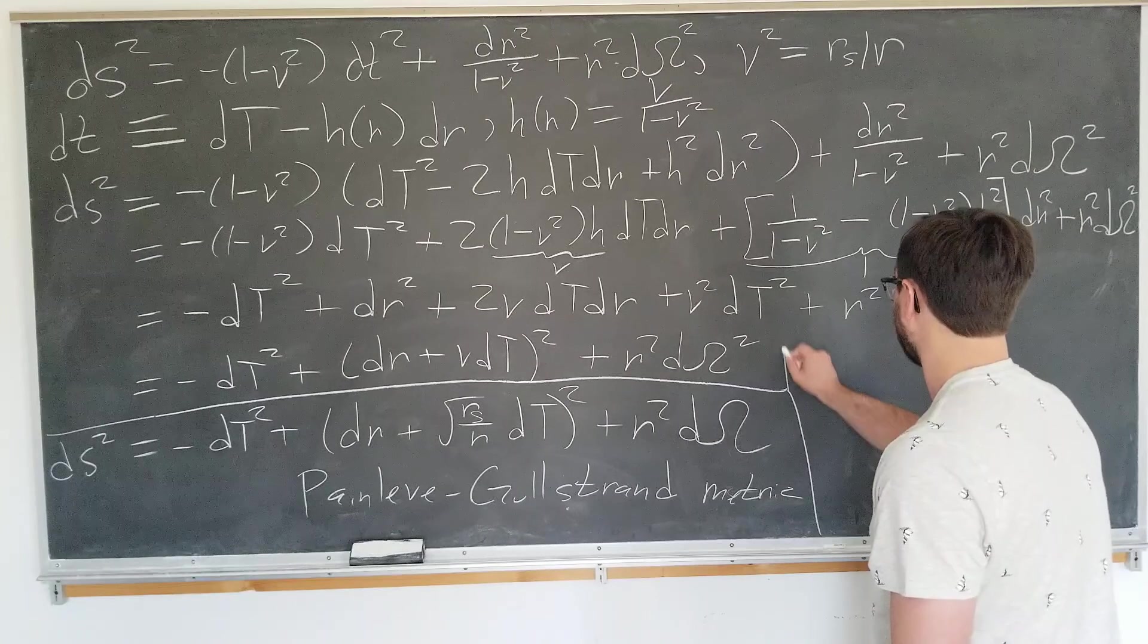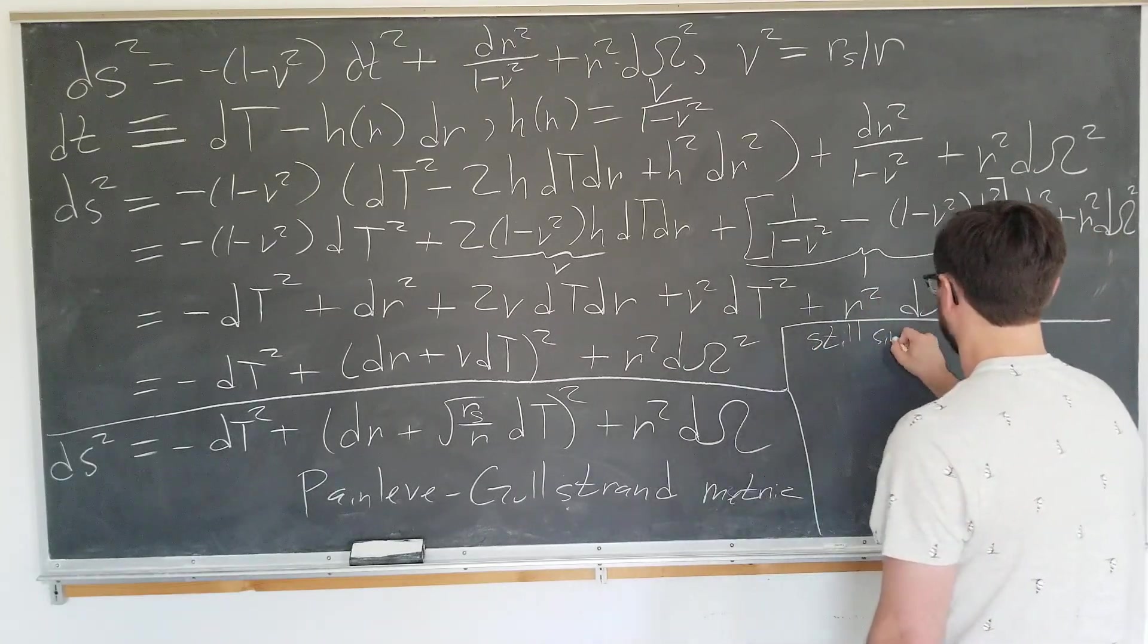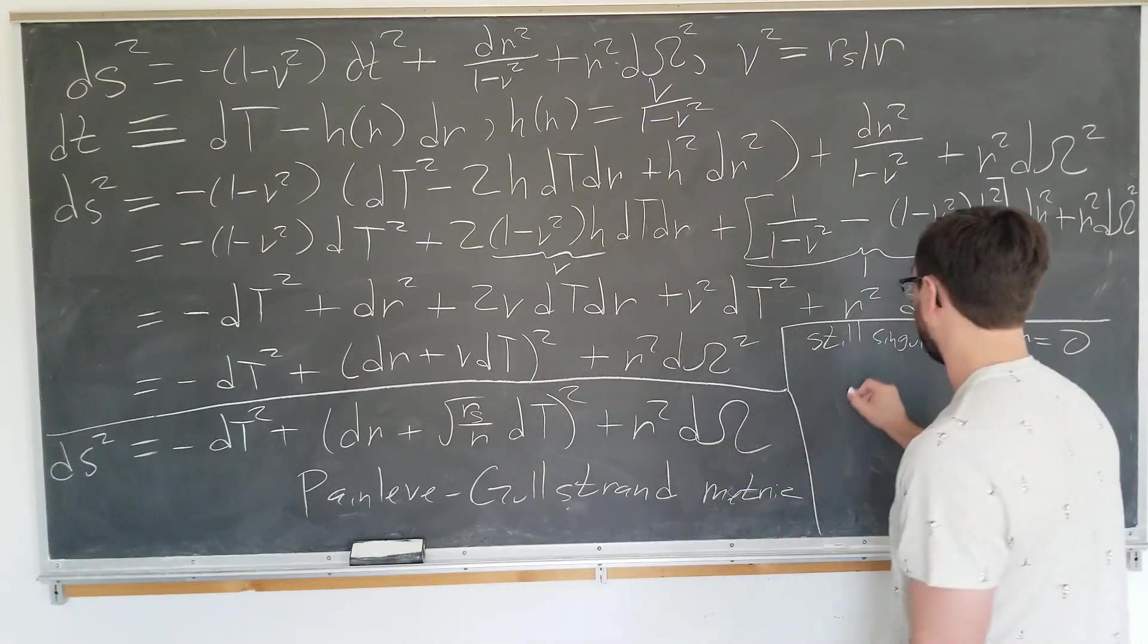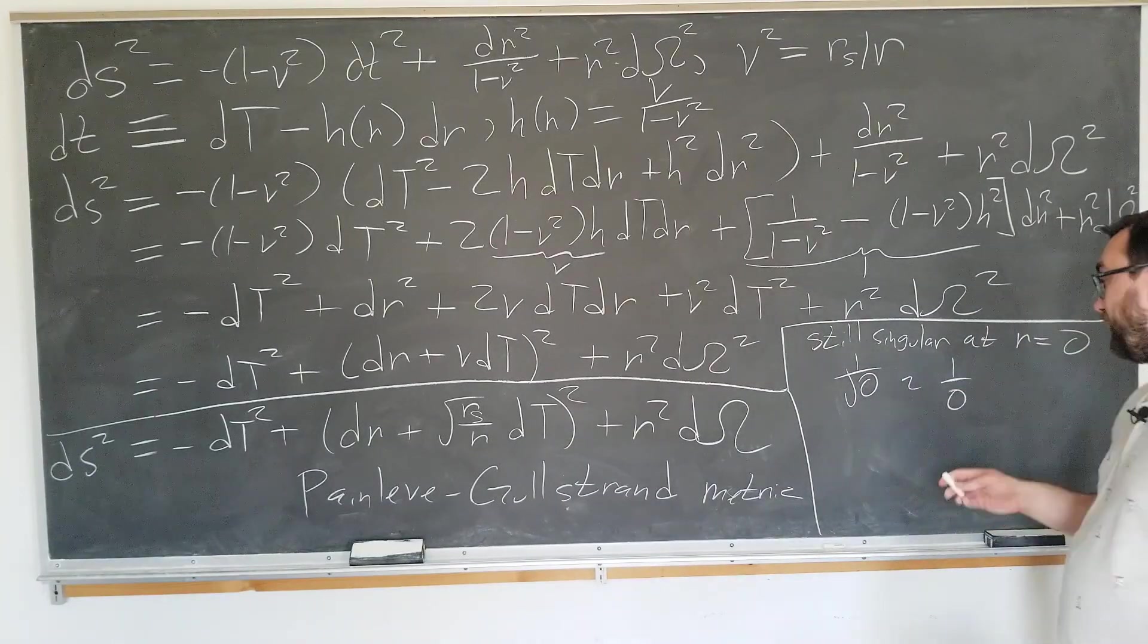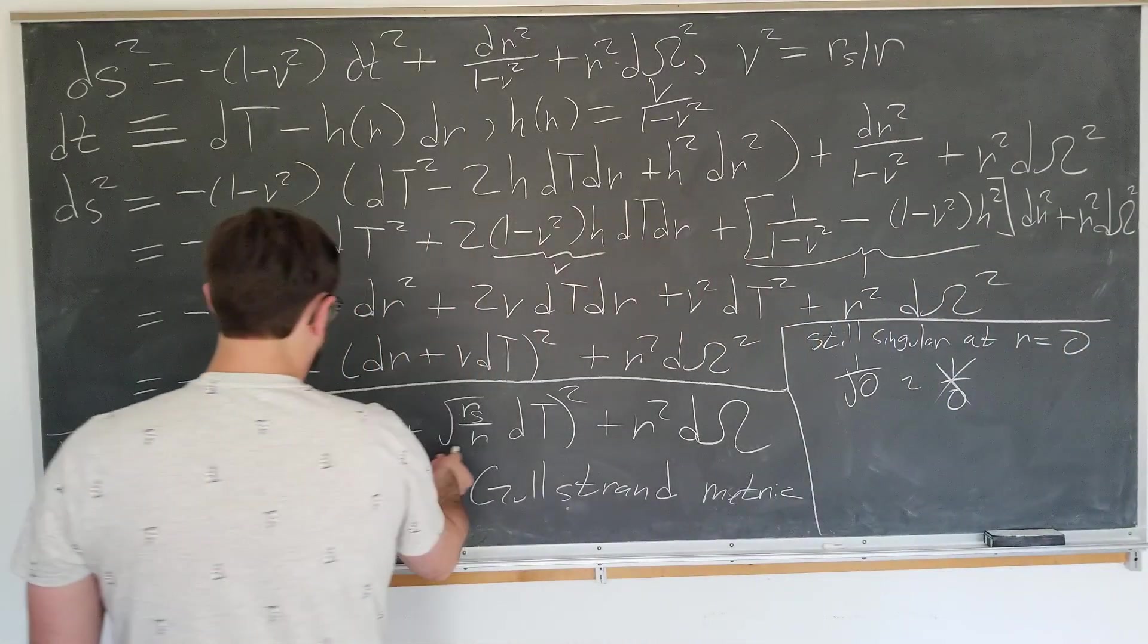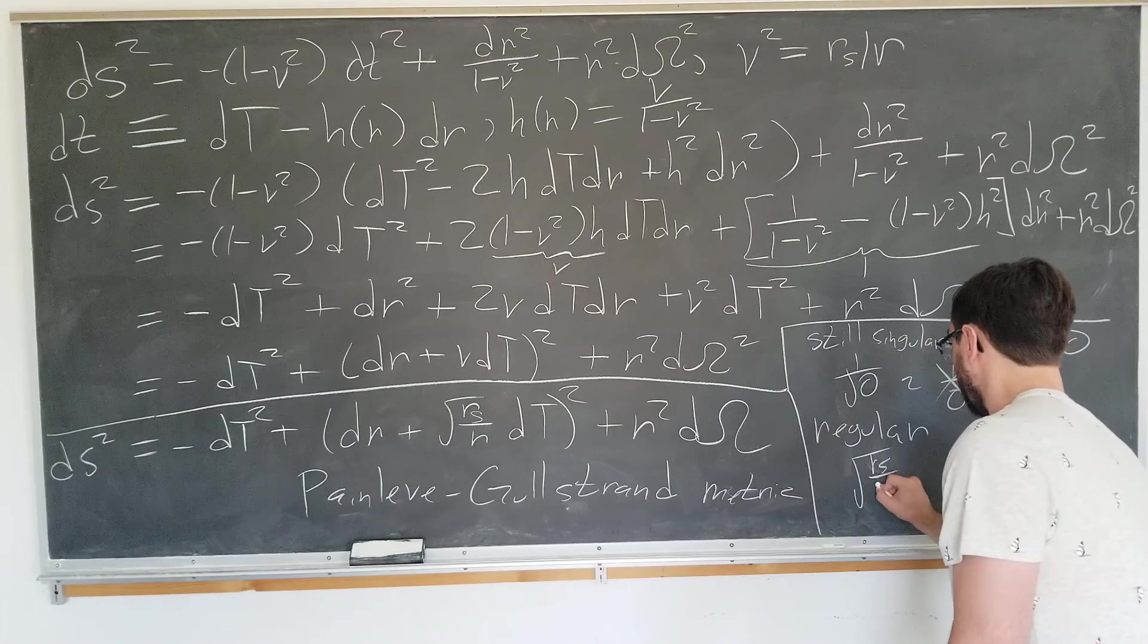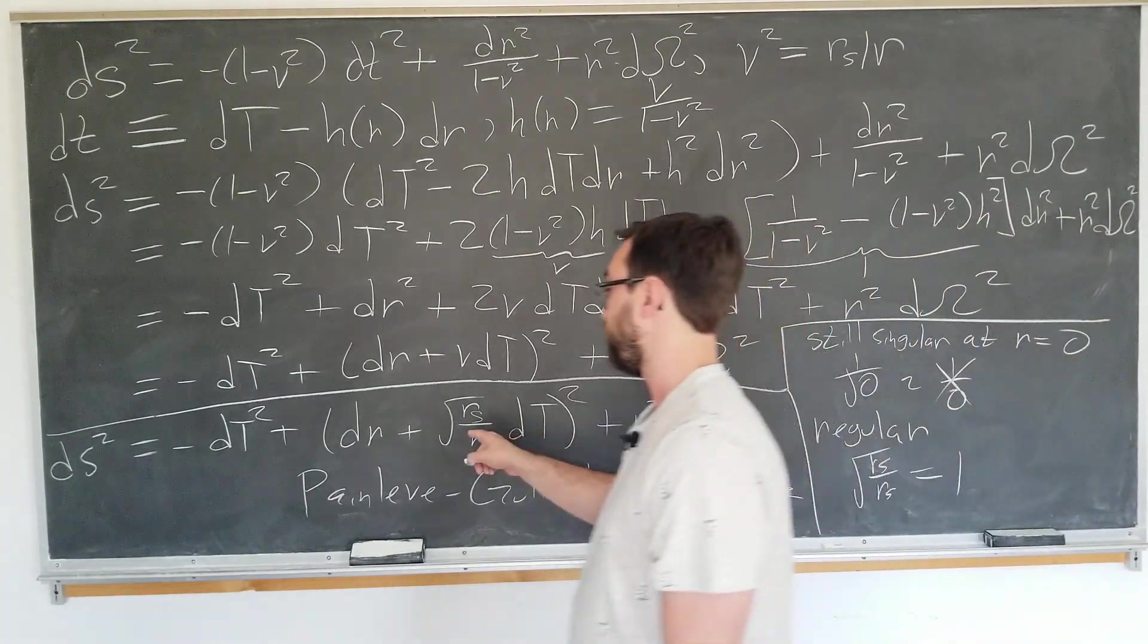But what's new is here, the whole point of why we did this: it's still singular at r equals zero from this portion here. We don't want to have a one over square root of zero. That's the same thing as one over zero, which is undefined. We don't want this. If we notice, if we plug the Schwarzschild radius in though, it becomes regular. Since we can have the square root of rs over rs is just equal to one. The metric is perfectly well behaved at the Schwarzschild radius.